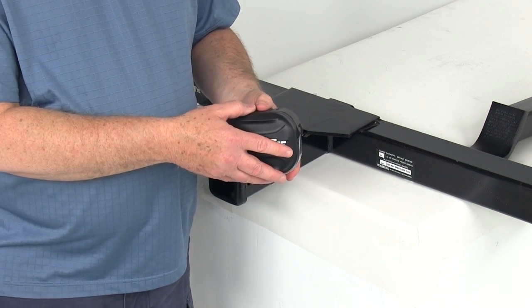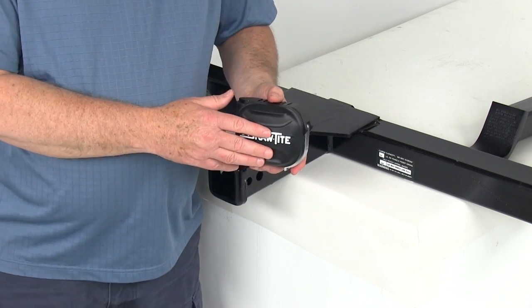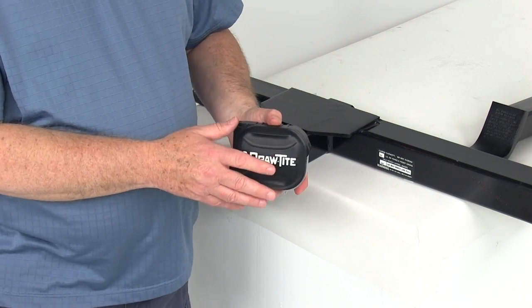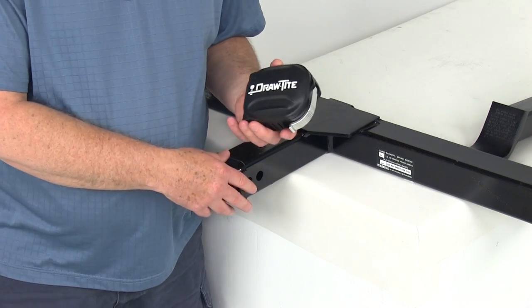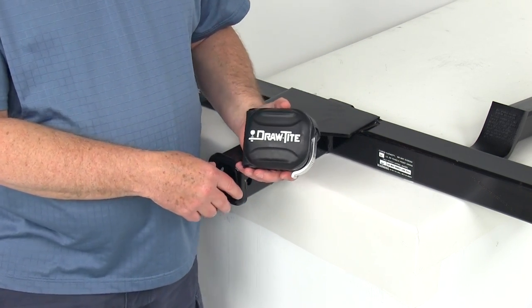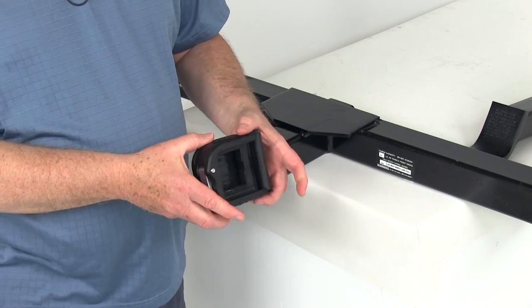This does quiet your ride by helping to eliminate the rattle and vibrations within your hitch receiver. This will stiffen and reinforce the connection between your hitch receiver and towing equipment or accessories and it will reduce the risk of equipment damage caused by a loose connection.